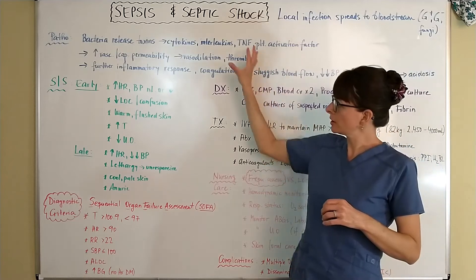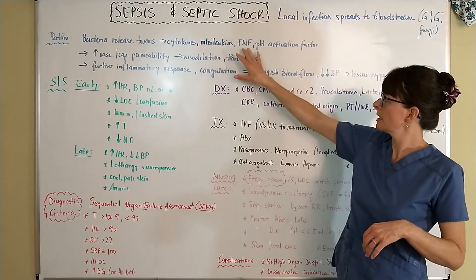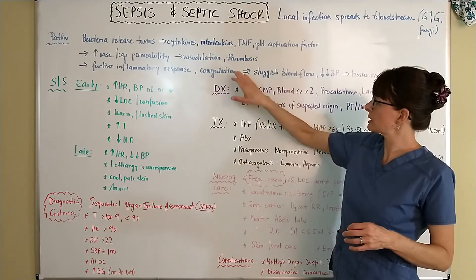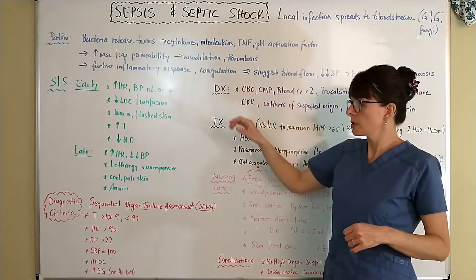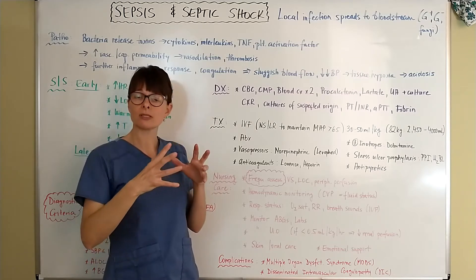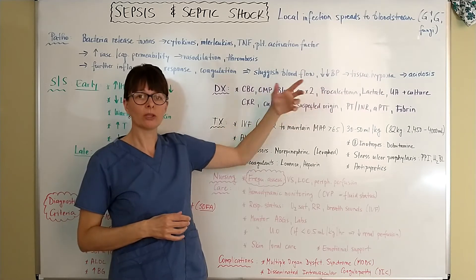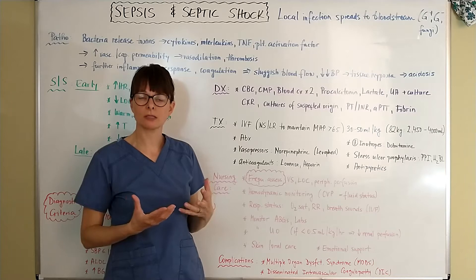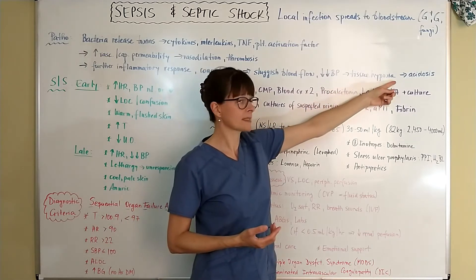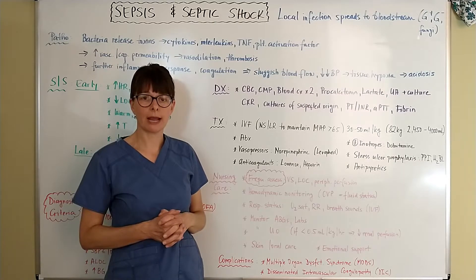All these mechanisms cause a further inflammatory response — more cytokines, interleukins, TNF, and platelet activation factor respond to the sites. Because the platelets are activated, coagulation occurs, leading to sluggish blood flow as platelets aggregate and fluid leaks out of the blood vessels. This leads to massive hypotension. When there is low blood pressure, certain organs are at risk and are not getting perfused, leading to tissue hypoxia, and then acidosis follows. Patients who are septic will many times be in metabolic acidosis.